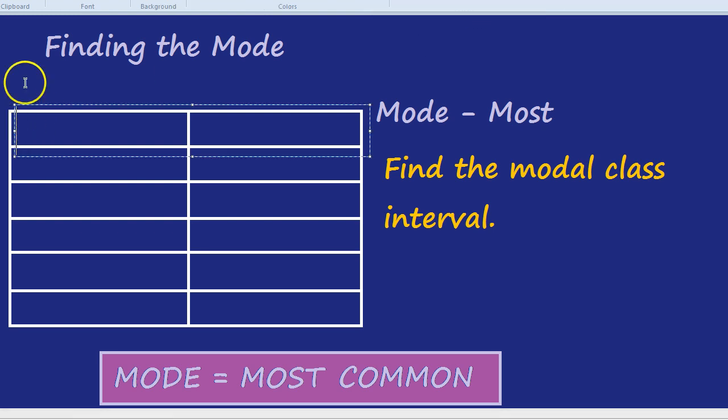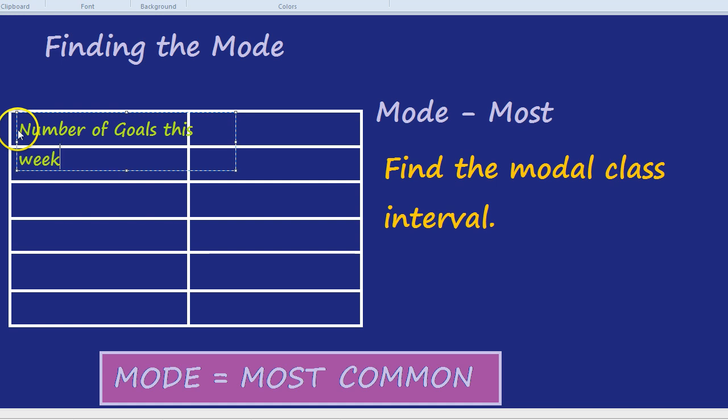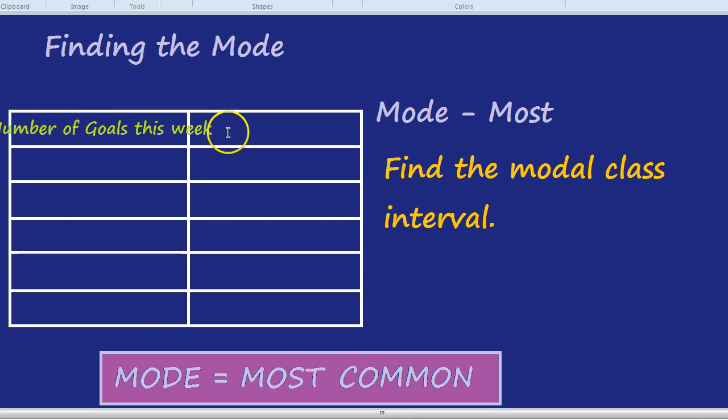Let's pick a scenario. Let's invent a scenario. Let's say number of goals this week. And this represents the different number of goals scored by a certain group of footballers this week. This column would be frequency.